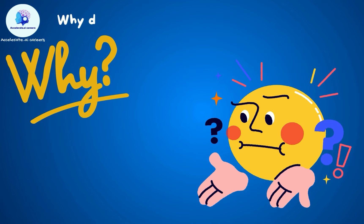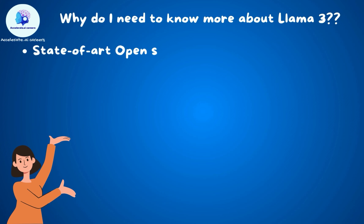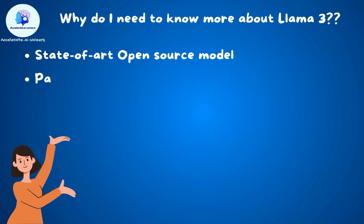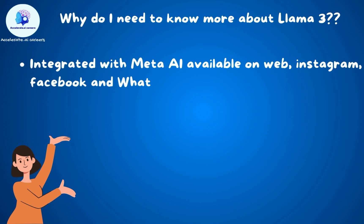Why do you need to learn about LAMA 3? The first reason is that it is a state-of-the-art open source model. Since it is open source and available on a large number of platforms, it is paving the way to accessible AI. Hence, anyone venturing into generative AI or large language models should know about it. Additionally, it is integrated with Meta AI, available on web, Instagram, Facebook, and WhatsApp.